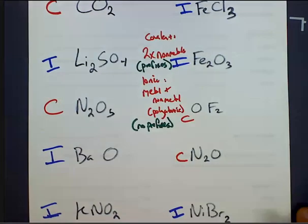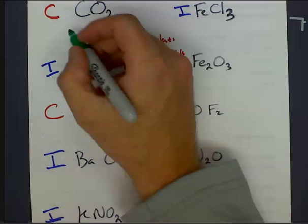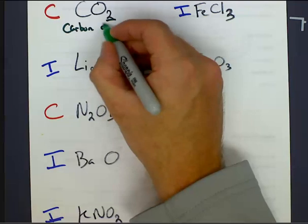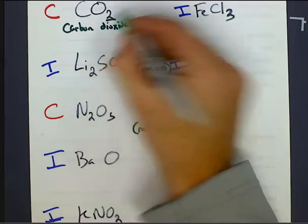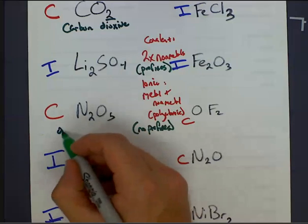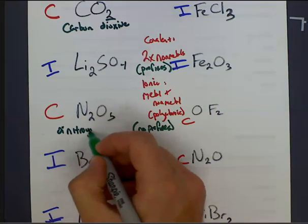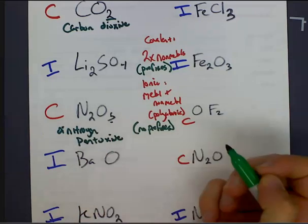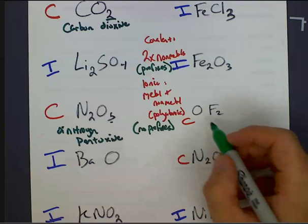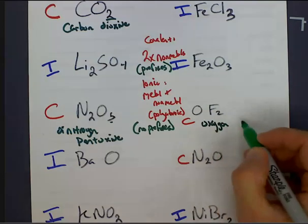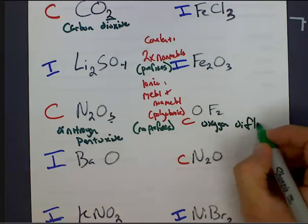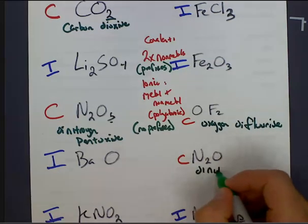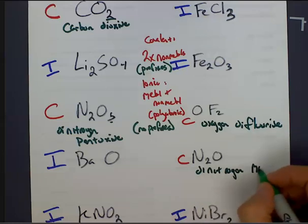All we've got to do is use the prefixes. So, we look at CO2, and it is carbon dioxide. We have dinitrogen pentoxide. Next covalent one here, oxygen difluoride, and we have N2O, dinitrogen monoxide.